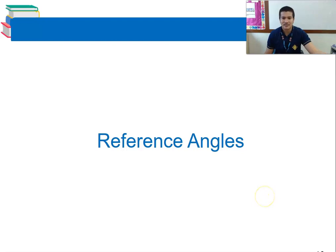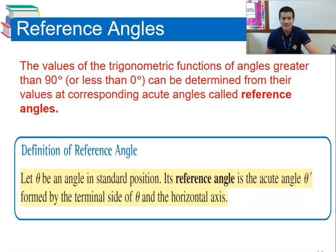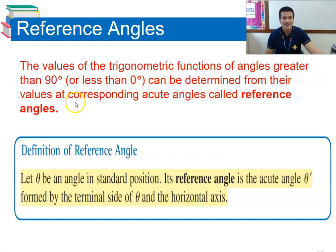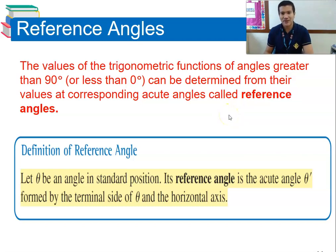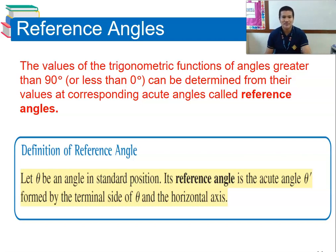Now let's discuss the reference angle. Let theta be an angle in standard position. Its reference angle is the acute angle theta-prime formed by the terminal side of theta and the horizontal x-axis. The values of trigonometric functions of angles greater than 90° or less than 0° can be determined by their values at corresponding acute angles — the special angles of 30°, 60°, and 45°.